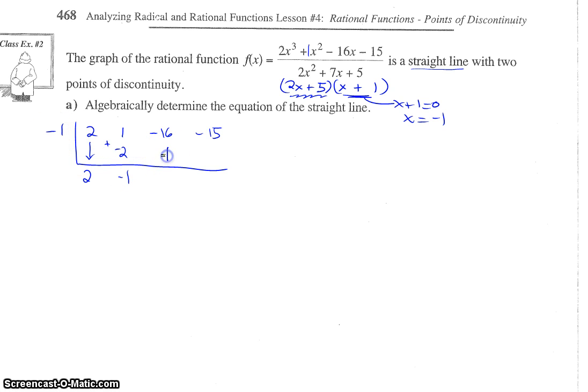We add, negative 16 and positive 1, negative 15. Multiply, negative 1, negative 15 is going to be positive 15. And add again, we get 0. Good, so that worked out nicely.